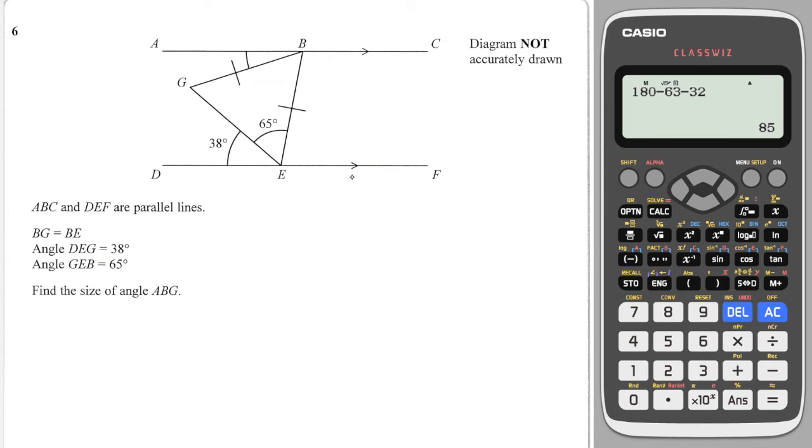Next question, we have some parallel lines and we have an isosceles triangle because these two are the same and it says find angle ABG. So we are looking for this angle in here. I am going to start with the isosceles triangle. So we know the angles at the bottom of an isosceles triangle are the same. So this is 65. So my other angle will be 180 minus 65 minus 65 which is 50. So this up here is 50.